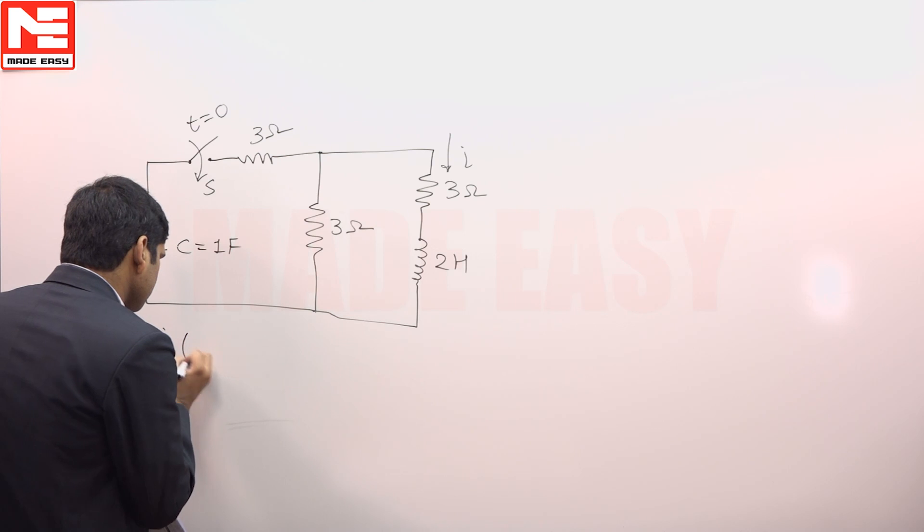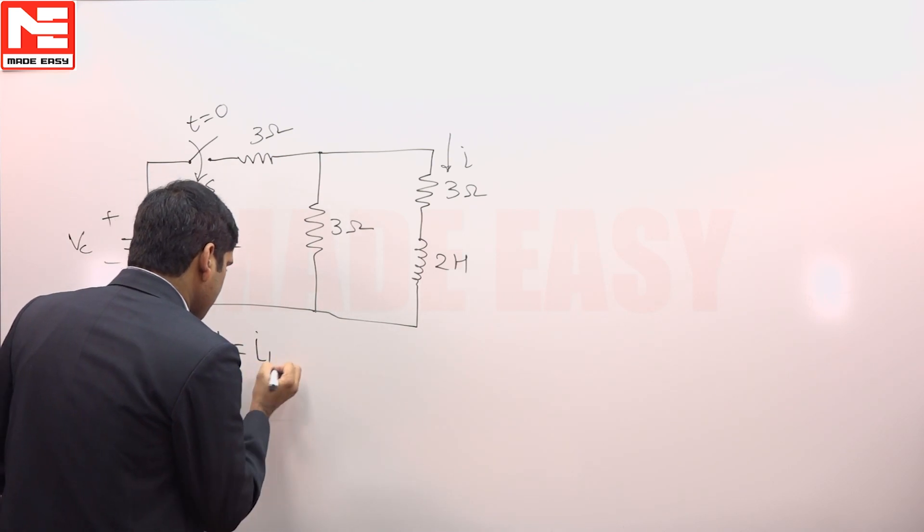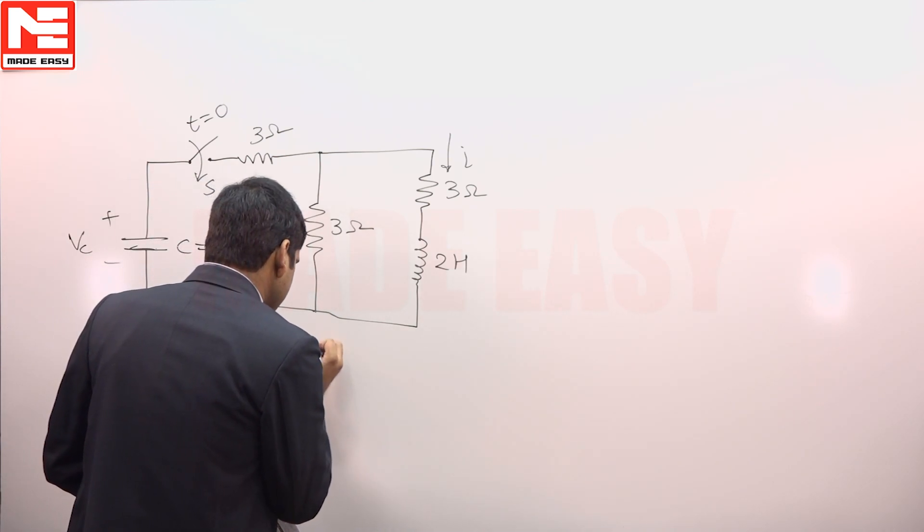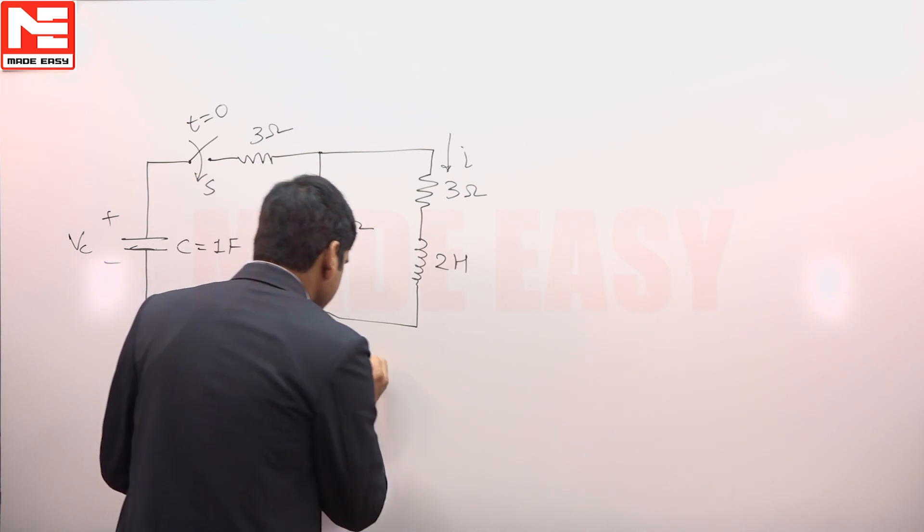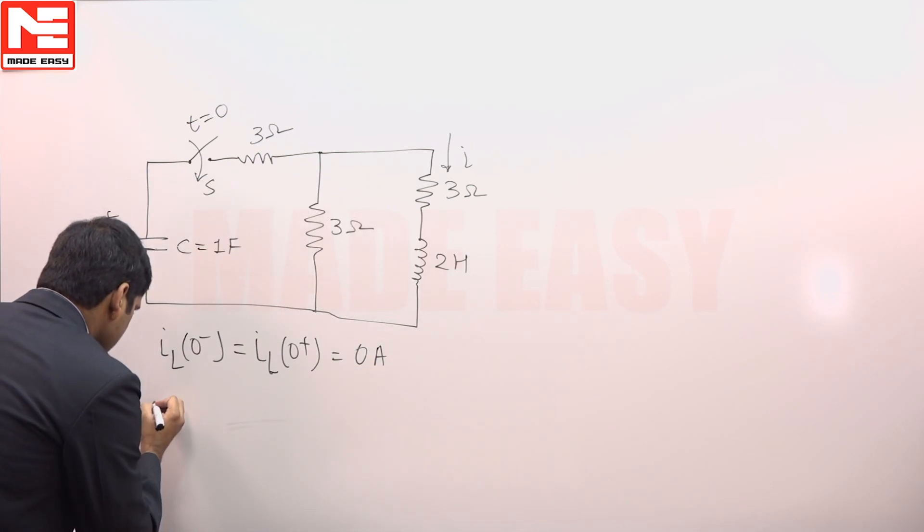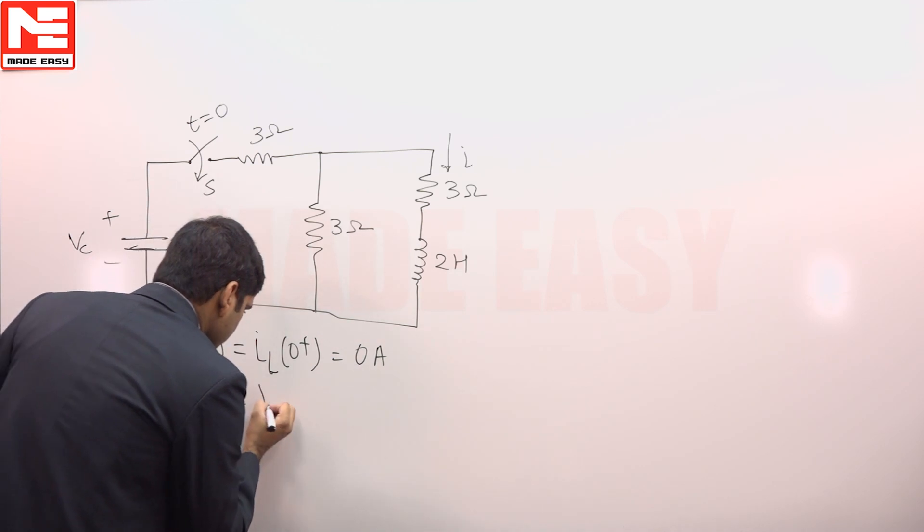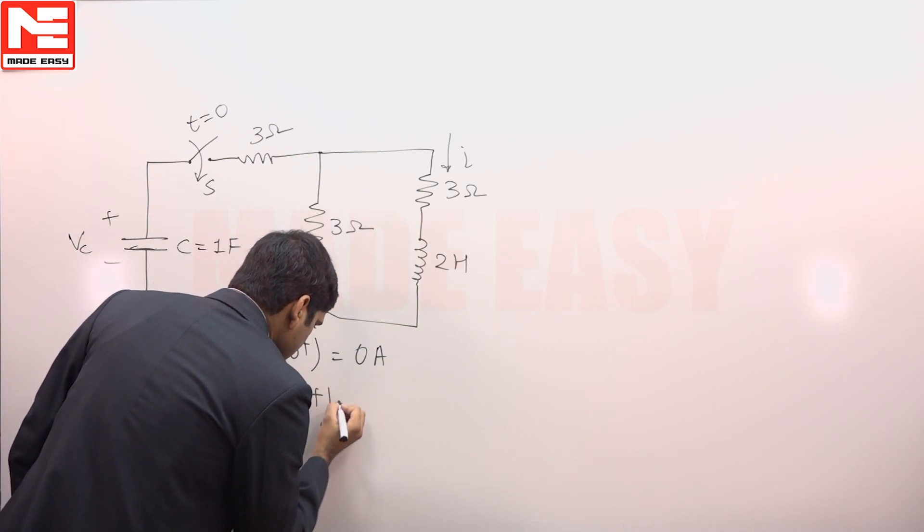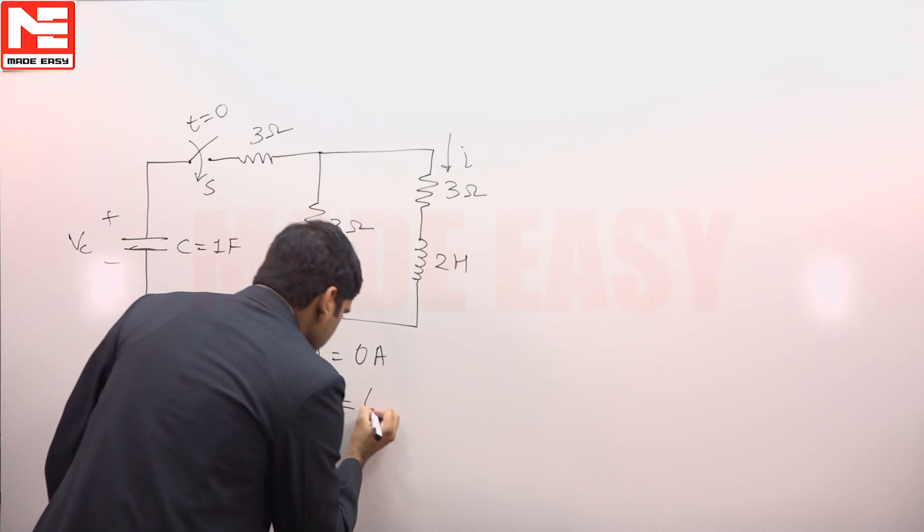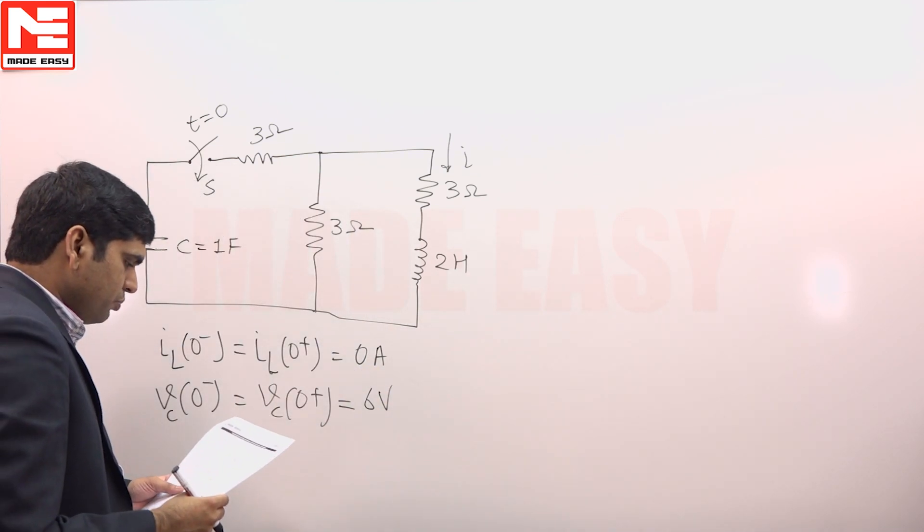IL(0-) should be equal to IL(0+), as conductors do not allow sudden change of current, equals 0 amperes. And also Vc(0-) is equal to Vc(0+), this should be equal to 6 volts, does not allow sudden change of voltage.